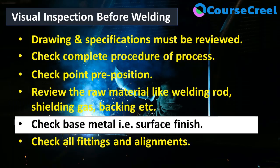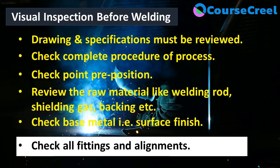We also need to check the base metal. The surface of the base metal should be properly finished; if the surface has any discontinuity, corrective action should be taken to achieve a finished surface. Then we should check all fittings and alignment — this is the most critical part of the welding process. Points that must be checked include groove angle, root opening, joint alignment, and backing.